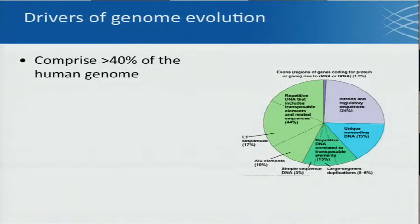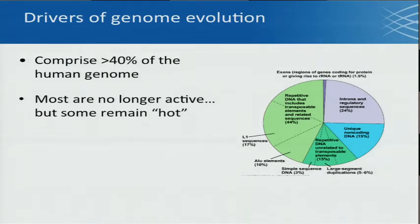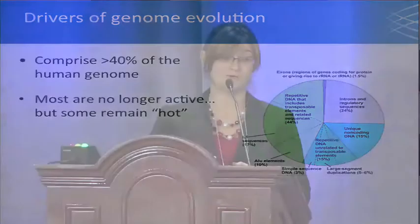Retrotransposons have been described as drivers of genome evolution. They comprise over 40% of the human genome, whereas protein-coding genes comprise only 1.5%. Most are no longer active, luckily for us, but some do remain hot — that is, they retain their ability to retrotranspose across the genome. They've been recently described as a major source of genetic variation.